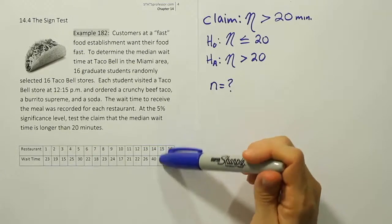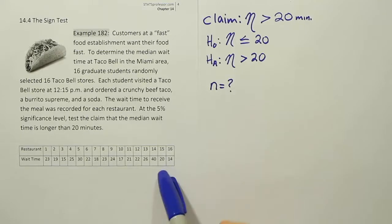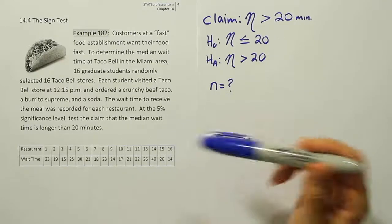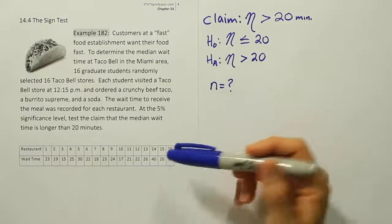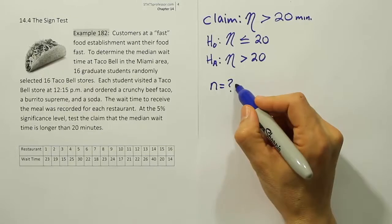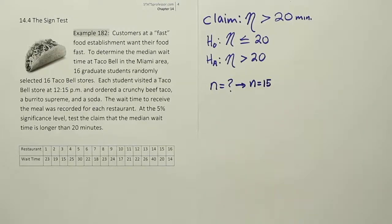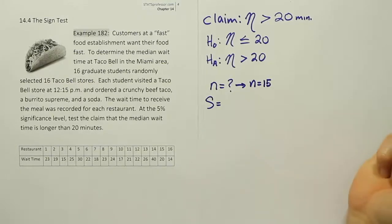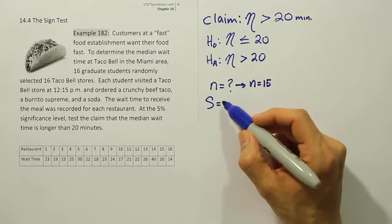You can see that the 15th value has to be discarded because that graduate student waited exactly 20 minutes. Because of that, we discard that value, and N is not 16 but rather 15. So N equals 15. Now once we know N is 15, the next thing to do is get the test statistic. We're going to call the test statistic S in this procedure — S is for the sign test.